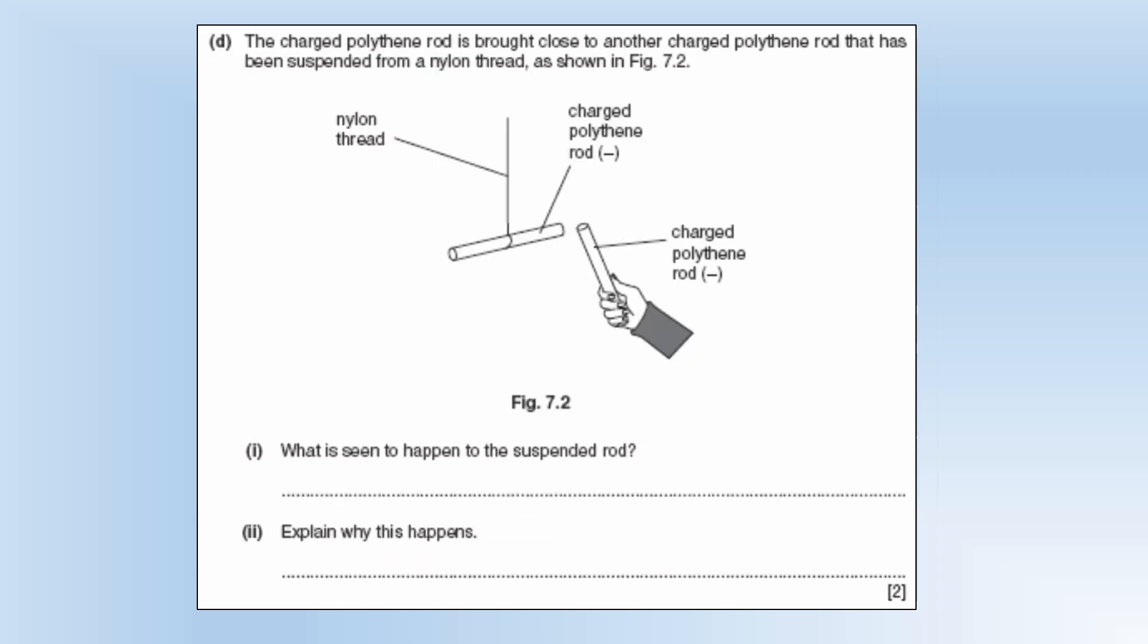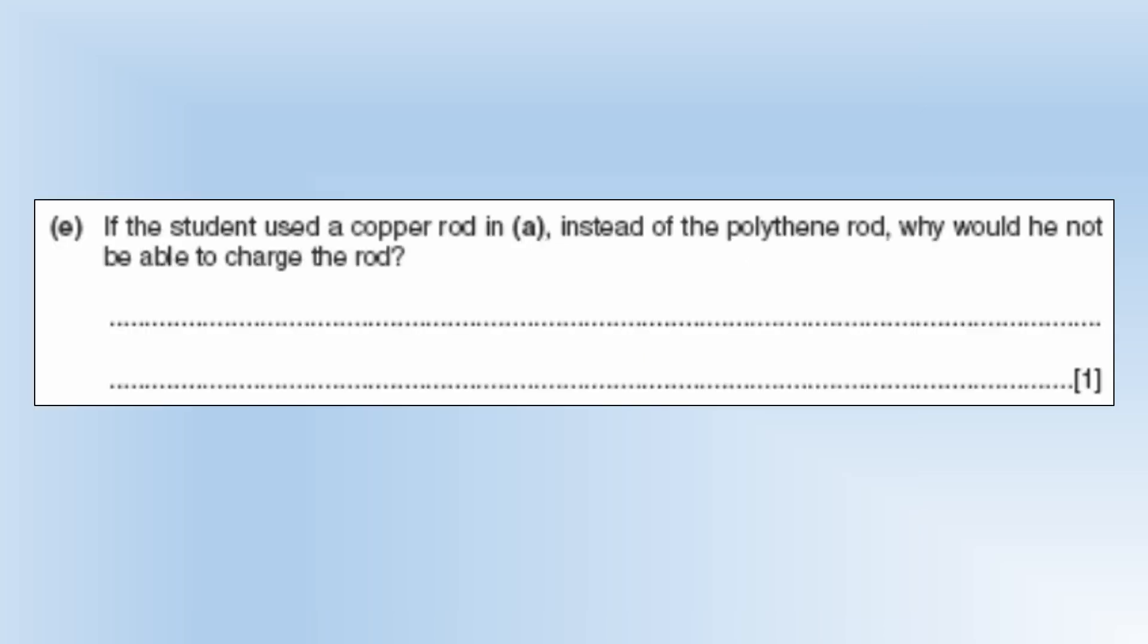The charged polythene rod is brought close to another charged polythene rod that is suspended from a nylon thread as shown. And you can see that they're both negatively charged. Well at least the ends that they're bringing together are. What would we see happen? Well it would be repelled. Because it's suspended it's probably going to spin away actually. So why does this happen? Well like charge is repelled. So they're both negatively charged. So they're going to repel each other. If the student uses a copper rod instead of a polythene rod. Why would he not be able to charge the rod? Well copper is a conductor. So you can't build up a charge on it. Because it's just going to conduct that charge away.